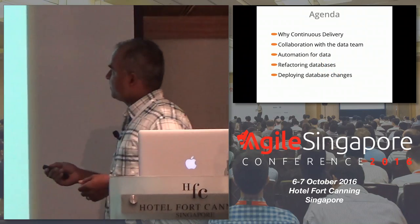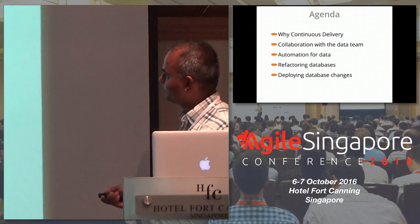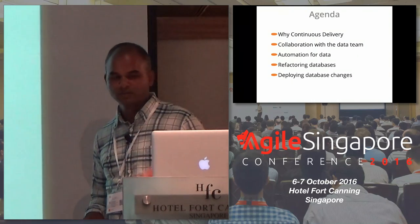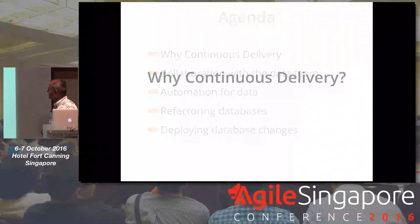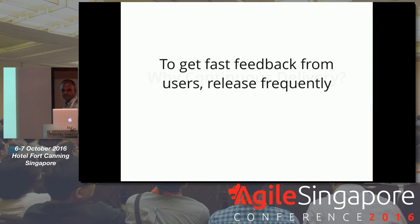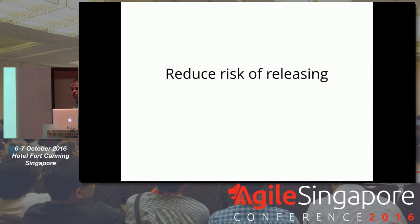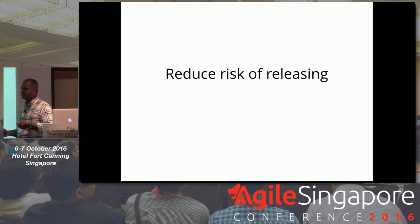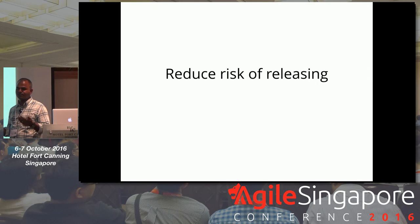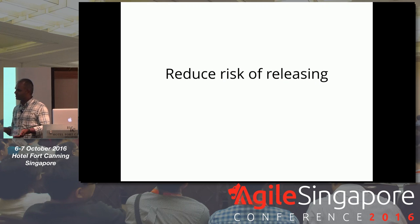Here's a two-minute primer on why you do continuous delivery in the first place. Basically, to get fast feedback and release frequently. This also reduces the risk of releasing itself. If you back up a bunch of stuff and release once in six months, you're carrying a lot of risk — like whether the business features are useful, and technical risk like will this deploy properly, are there bugs, integration risk, and things like that.